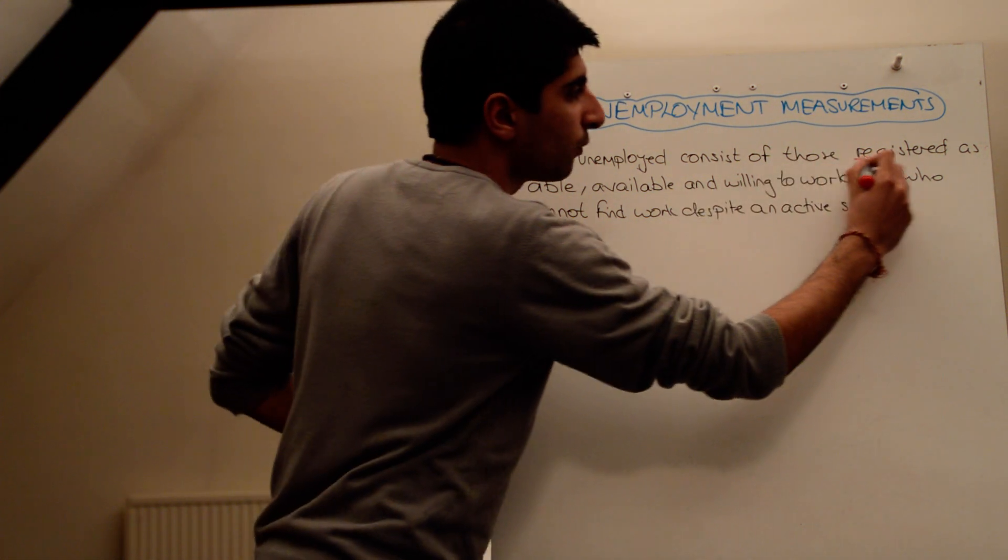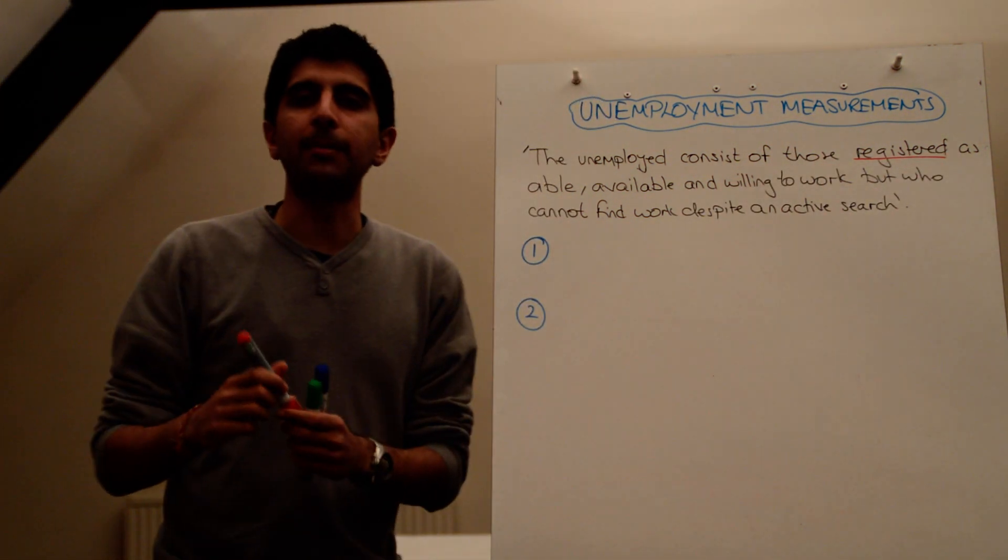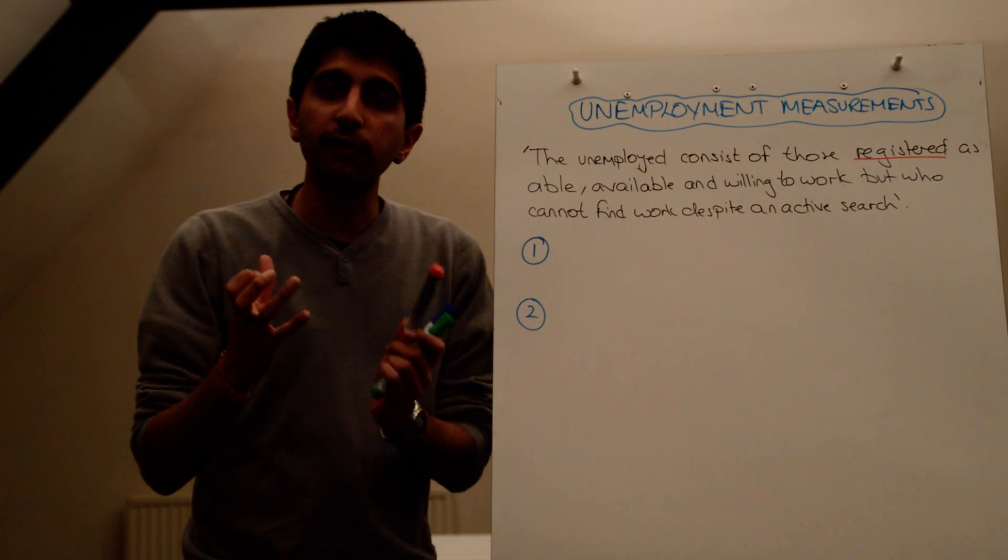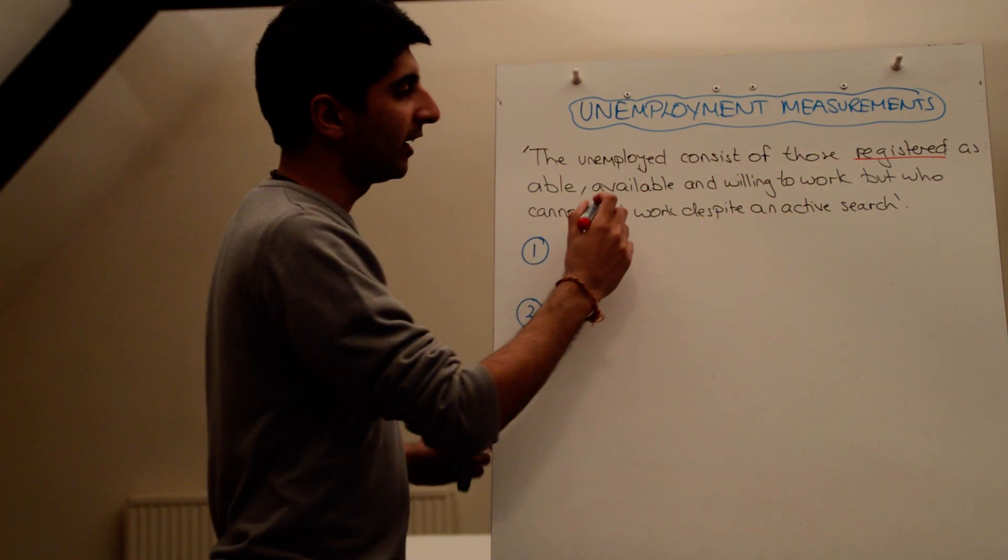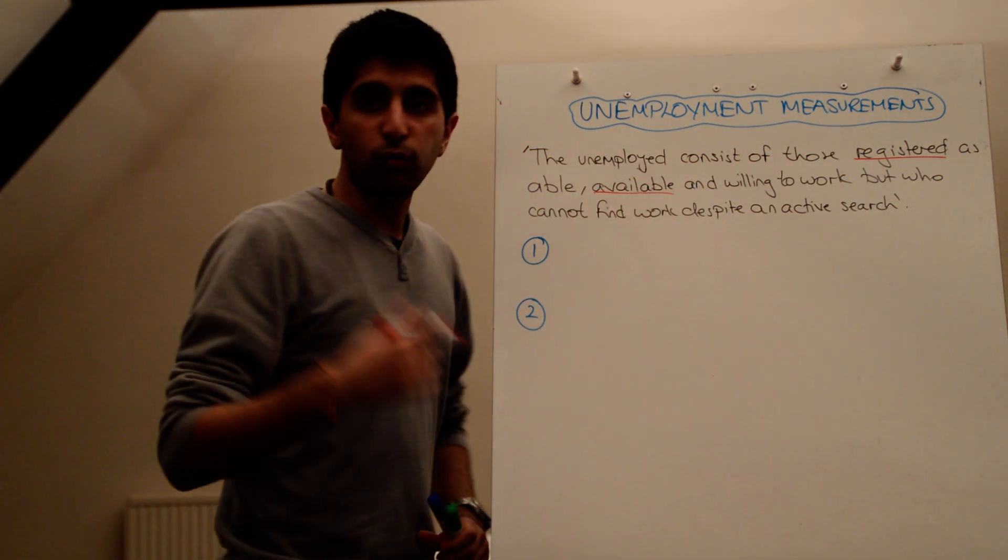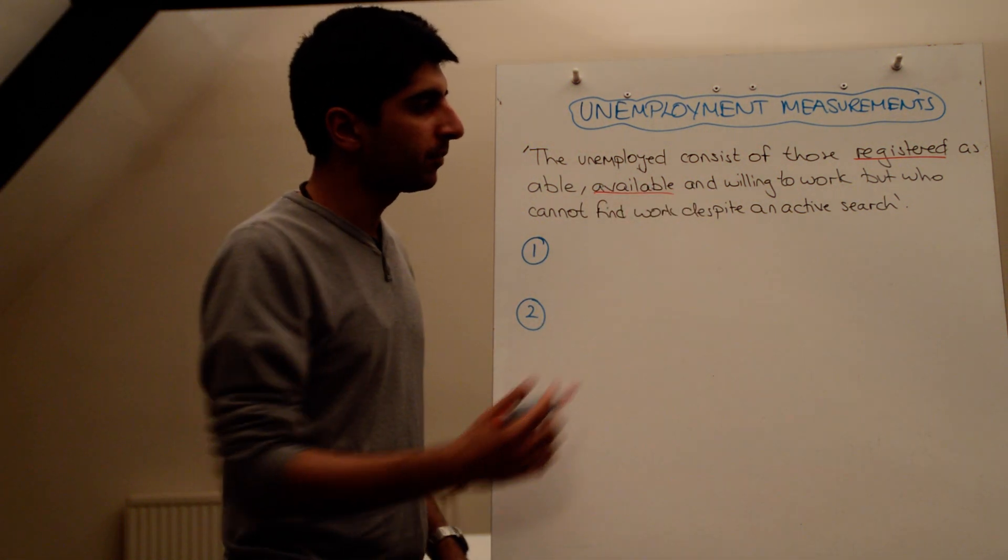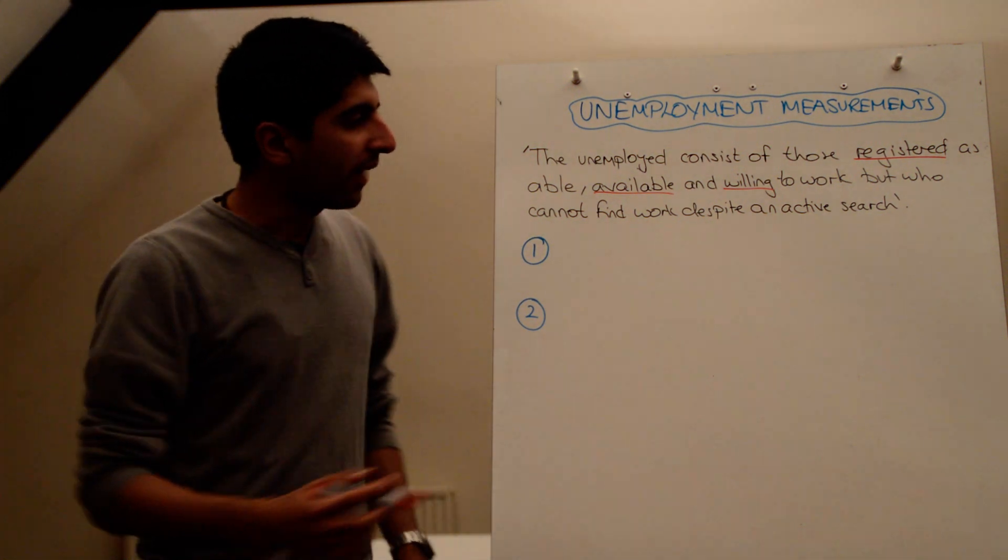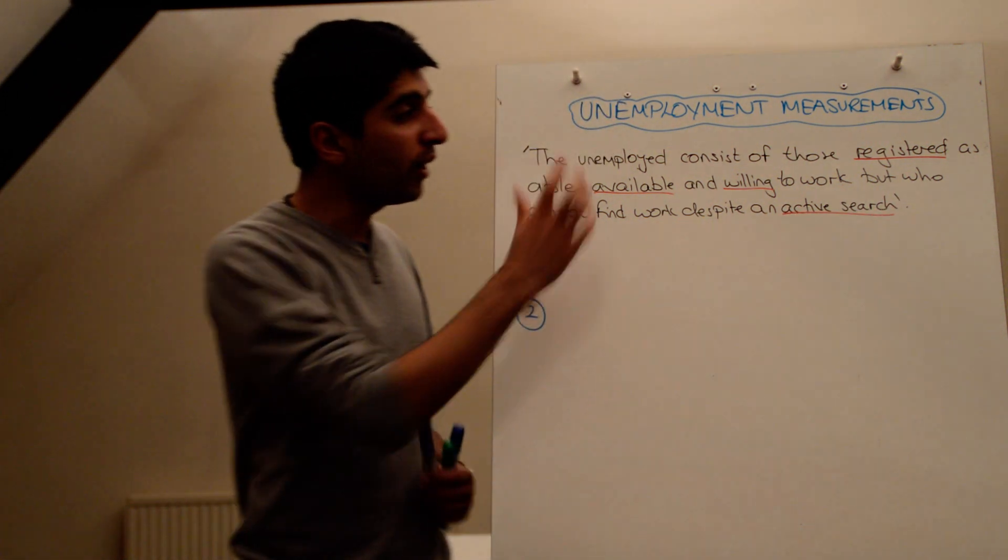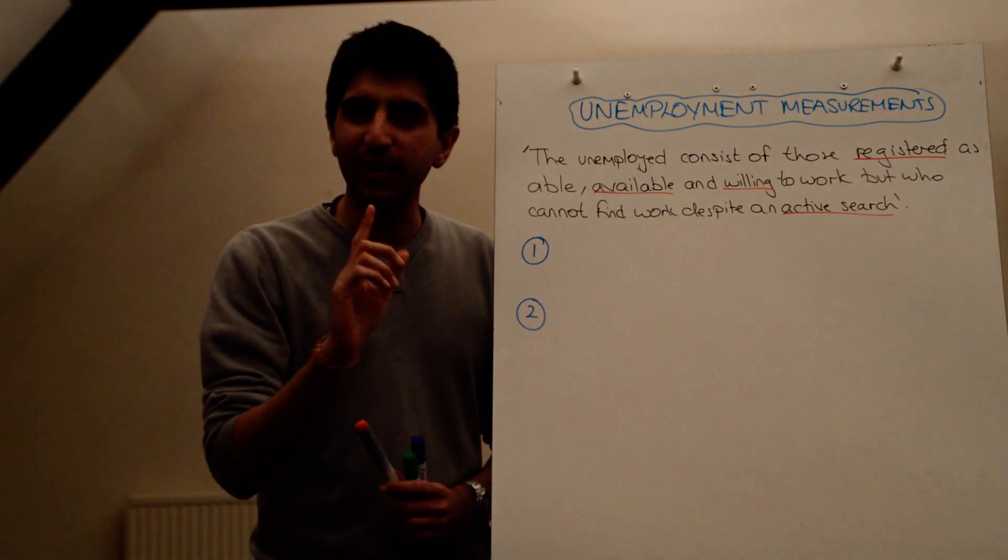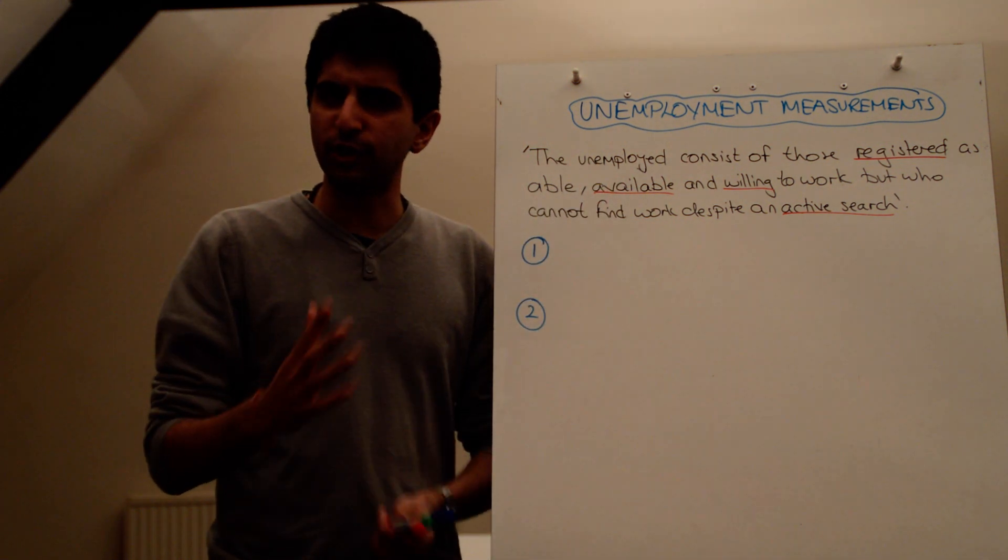One, those that are registered to work. We're not looking at babies and the elderly, we're looking at those of a working age, those who actually can work. So, they need to be able, they need to be available, ready to start in a given period of time, willing to work is important, and they need to be actively searching. So, you need to know this definition word for word, it's a very important definition of unemployment, not just someone that doesn't have a job.